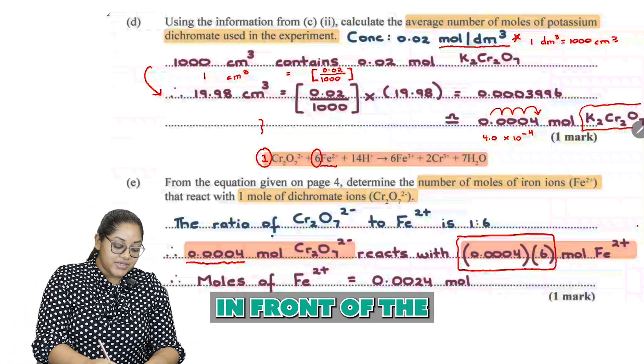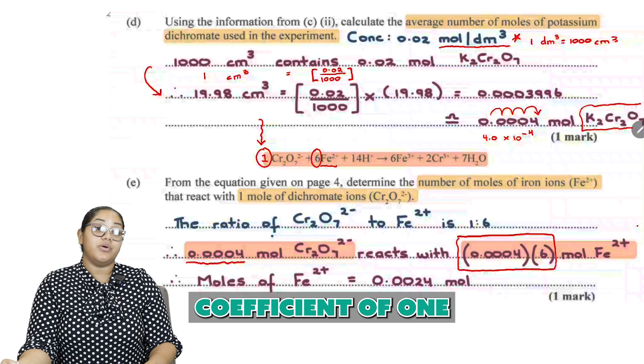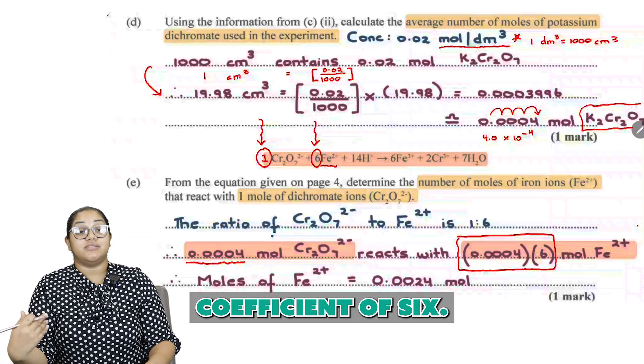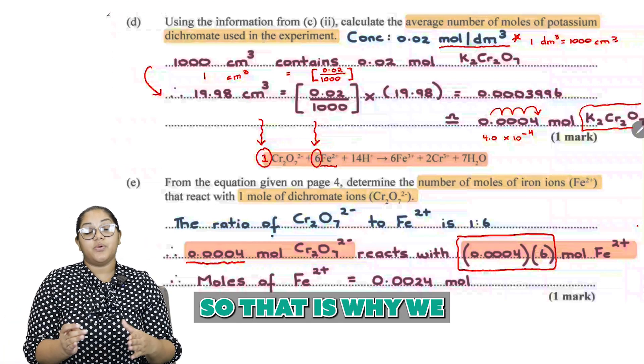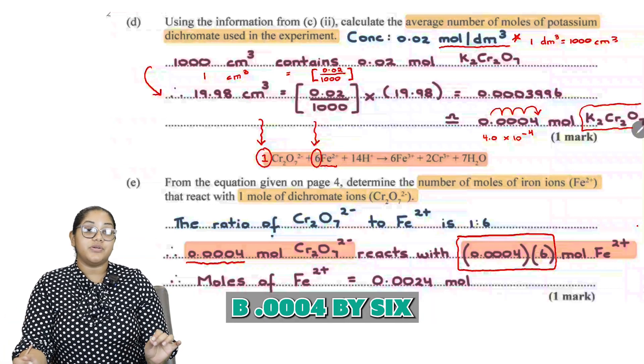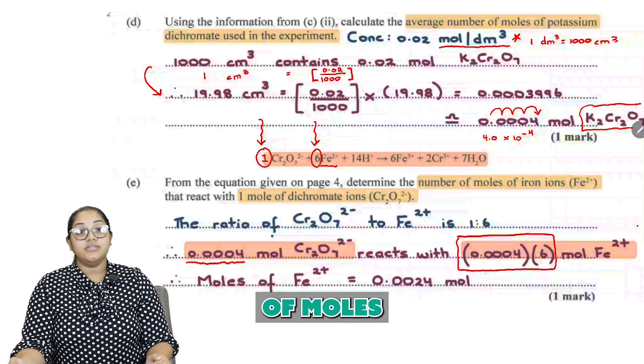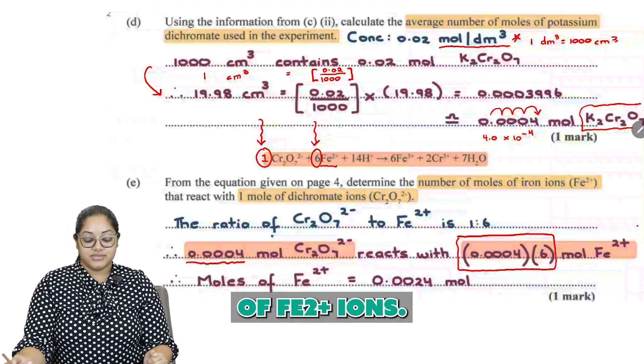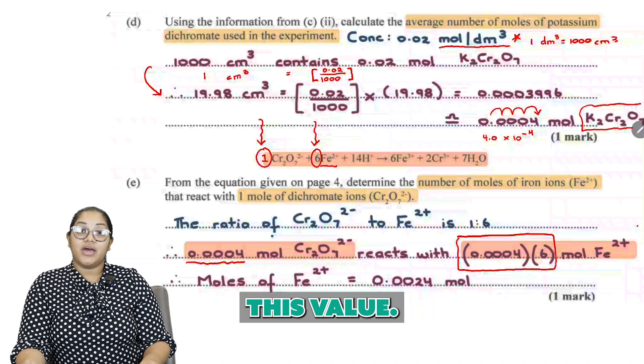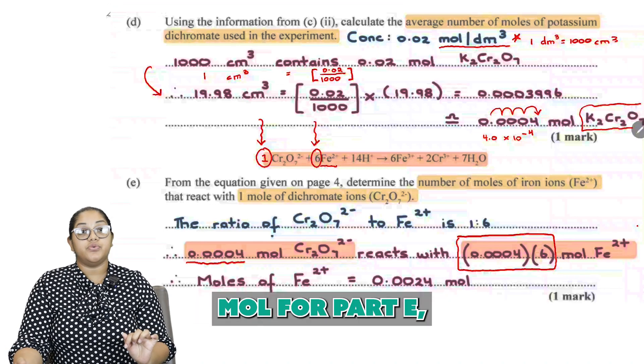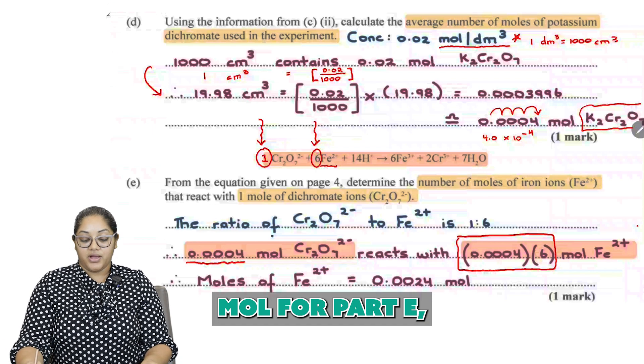So 0.0004 moles of dichromate reacts with 6 times that amount of Fe2+ ions. So look at what I have here, that same value multiplied by 6. Now where did the 6 come from? Remember we just got our mole ratio. We got a 1 to 6 ratio. Notice in front of the dichromate ion, we had a coefficient of 1. And for the Fe2+ ion, we had a coefficient of 6. So that is why we are multiplying the 0.0004 by 6 to get the number of moles of Fe2+ ions. So go ahead and calculate this value. You are supposed to get 0.0024 moles for part E.